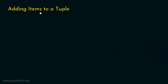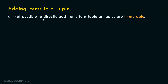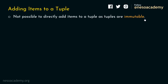How to add items to a tuple? It is not possible to directly add items to a tuple, as tuples are immutable. This means that we cannot add, remove, or change items of a tuple. Is there any workaround for this? Yes, fortunately, there is a workaround.